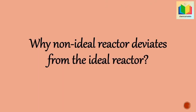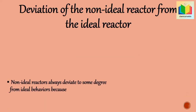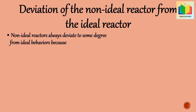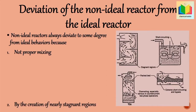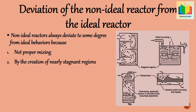Next question: why do non-ideal reactors deviate from ideal reactors? Non-ideal reactors deviate because if there is no proper mixing, the molecules of reactant do not spend an equal amount of time or space time in the reactor. Another reason is the creation of nearly stagnant regions in the vessel — in some sections of the reactor, fluid flows very slowly or does not flow at all, reducing the effective volume available for reacting fluid, as shown in the figures.